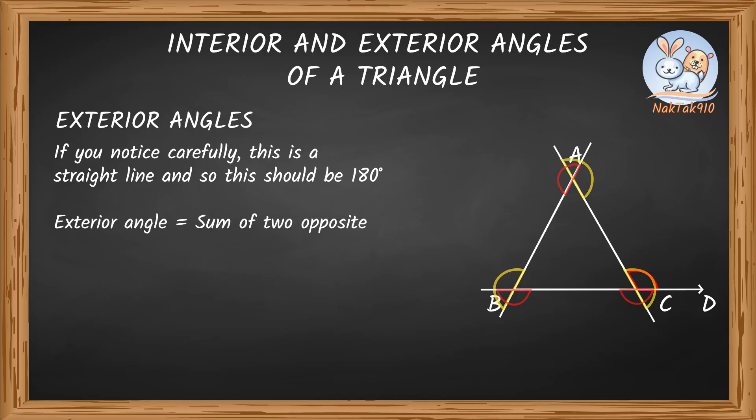In any triangle, exterior angle is equal to sum of two opposite interior angles. In this triangle ABC, exterior angle is angle 3 and the opposite interior angles are angle 1 and angle 2.